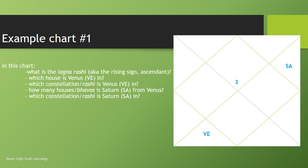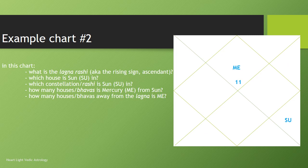And now we have a second chart here you can practice with. Example chart number two — again a fresh chart. What is the lagna rashi, otherwise known as the rising sign or ascendant in this chart? Which house is Sun in, symbolized by SU? Which constellation or rashi is Sun in? And how many houses or bhavas away is Mercury — symbolized by ME — from the Sun? And then how many houses or bhavas away from the lagna is Mercury? Don't go to the next slide until you're ready for the answer — just pause your video at this point.